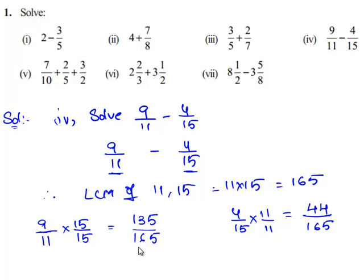Since we have obtained the equivalent rational numbers for 9/11 and 4/15, we shall subtract these two equivalent rational numbers. Instead of 9/11 minus 4/15, we shall subtract 44/165 from 135/165.